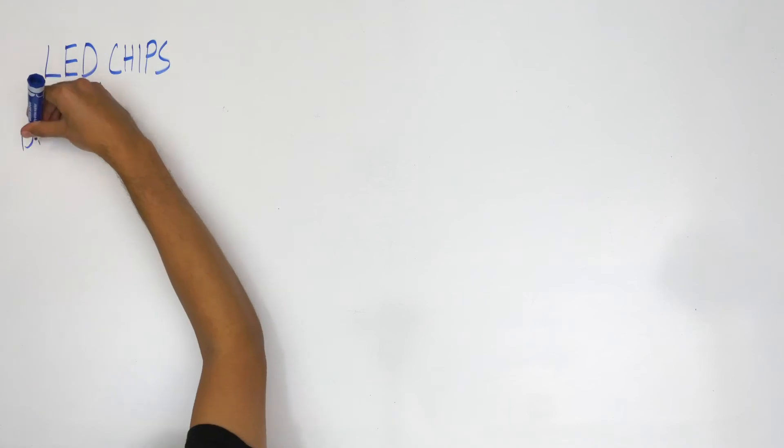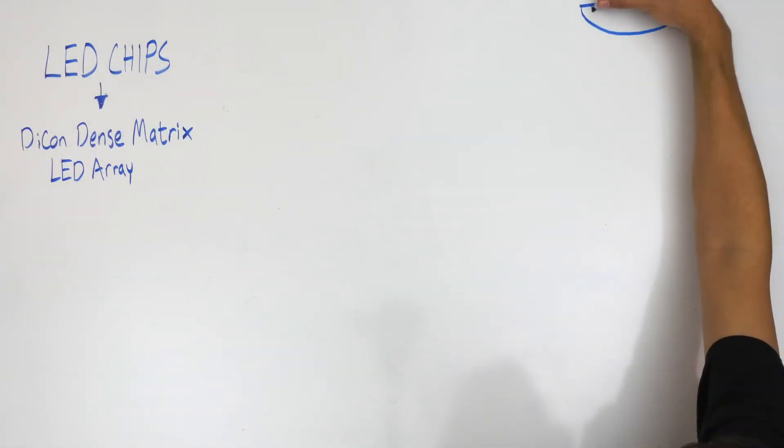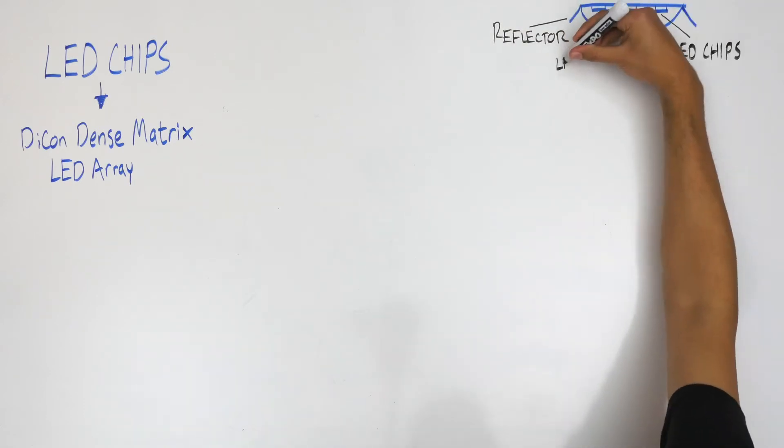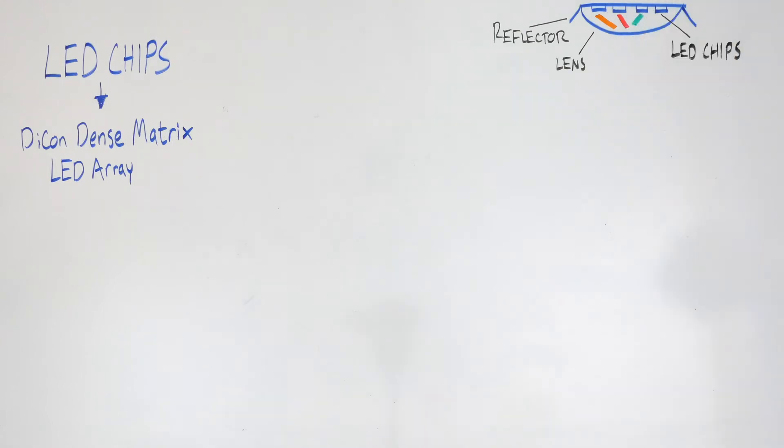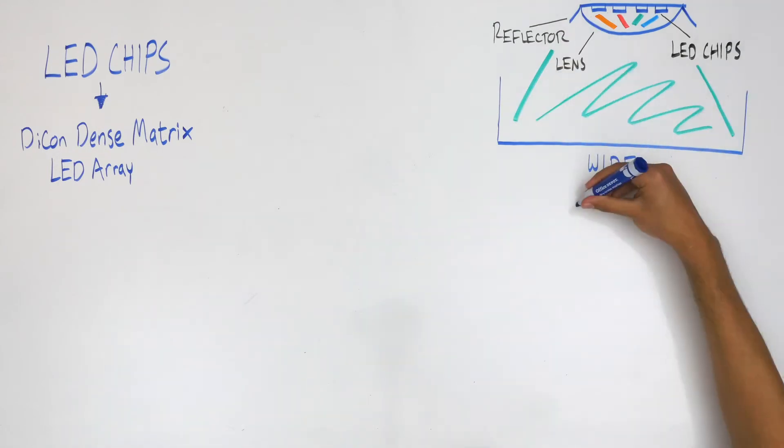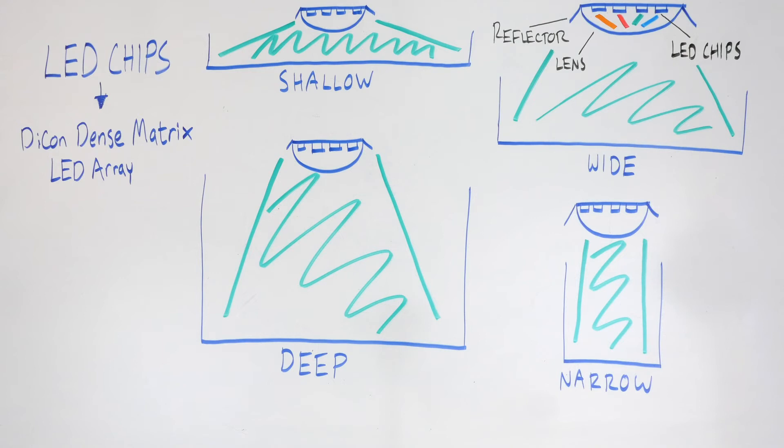The LED chips are the foundation for Daikon's Dense Matrix LED array. These chips, which are arranged in an area about the size of a dime under a single lens, generate all the necessary colors across the visible spectrum along with UV light. The Dense Matrix array can be easily optimized for wide, narrow, deep, or shallow coverage. And this light is almost entirely uniformly distributed because it is coming from a simulated point source.